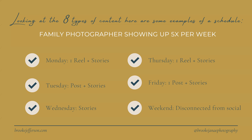Looking at the eight types of content, here's an example schedule for a family photographer who decided to show up five times per week. On Monday, post a reel and be active in stories. On Tuesday, have a feed post and be back in stories. On Wednesday, just show up in stories — nothing extra. On Thursday, post another reel and show up in stories. On Friday, do one more feed post and continue in stories. Saturday and Sunday, disconnect from social completely — don't log in, don't post, don't look at it. Come back ready to go on Monday.